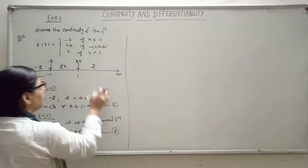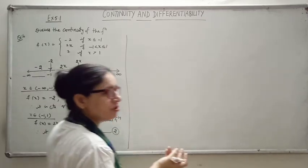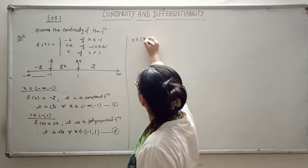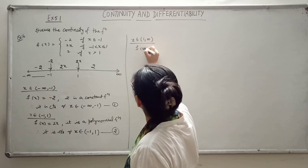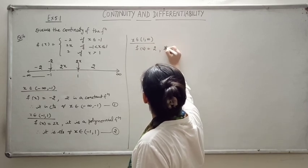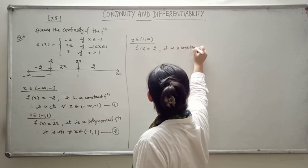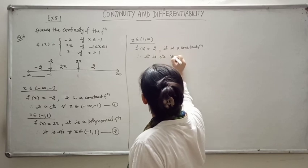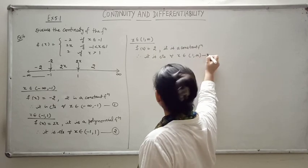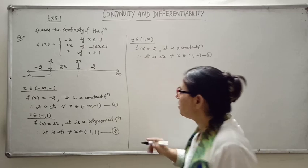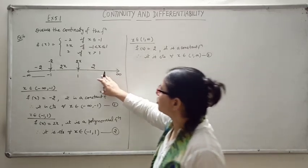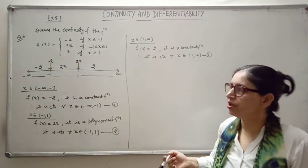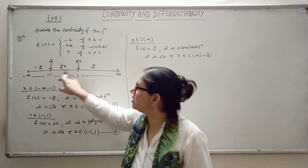For the third interval x belongs to 1 to infinity, f(x) equals 2, which is again a constant function. Therefore it is continuous for all x belonging to 1 to infinity — name it 3. So by results 1, 2, and 3 the function is continuous in all three intervals. We need to check continuity only at the two critical points.